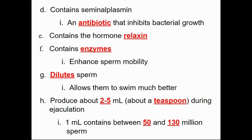Semen also contains seminoplasmin, an antibiotic that inhibits bacterial growth and prevents spreading bacteria into the vagina. It contains a hormone called relaxin, enzymes that enhance sperm mobility, and it dilutes the sperm so they can swim — initially the sperm are extremely crowded together, and the semen spreads them out so they can travel more effectively.